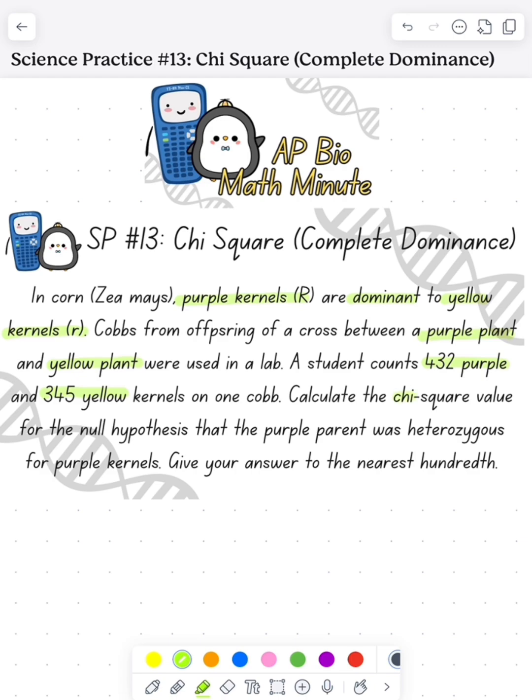We see that the offspring are 432 purple and 345 yellow. We want to calculate a chi-square where the null hypothesis is that the purple plant is heterozygous. We want to give that number to the hundredths place.